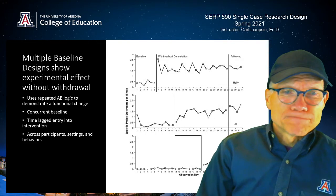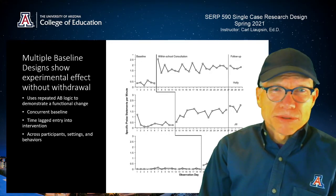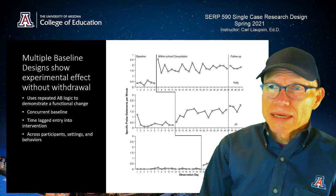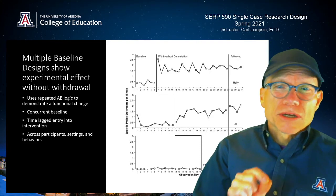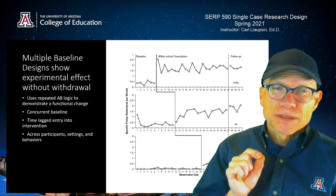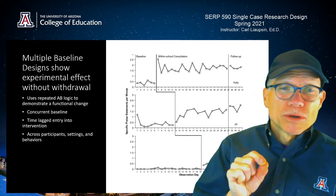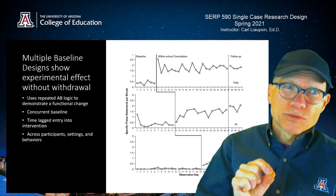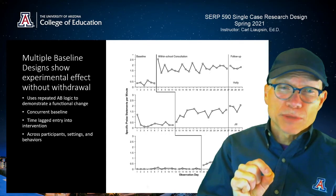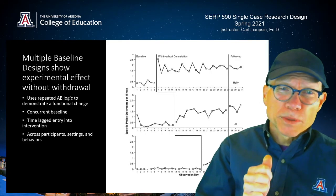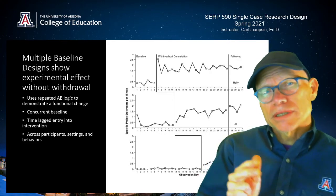Let's sum this all up. Multiple baseline designs allow you to show experimental effect without withdrawal. It uses a pretty simple repeated A-B logic to demonstrate functional changes or experimental effects. Generally we're looking at concurrent baselines — meaning you start everybody at the same time — and then you have time-lagged entry into intervention. You can implement across participants, settings, or behaviors, but watch out implementing across behaviors to make sure you have behaviors that are functionally similar but functionally independent.